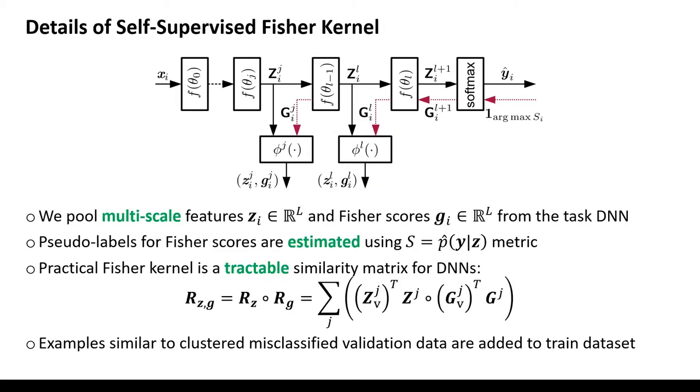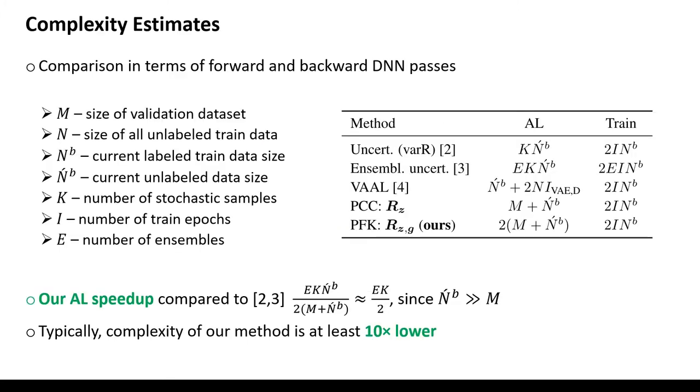We calculate Fischer kernel by pulling multiscale features and estimating pseudo-labels. Complexity of our method is only single forward-backward paths per data point.